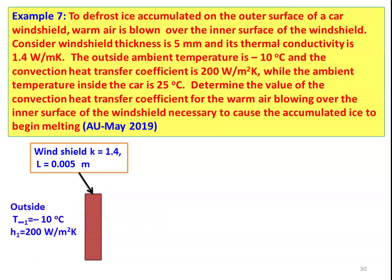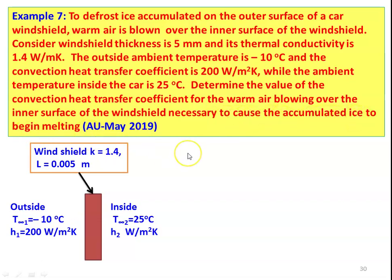The windshield has K = 1.4 W/m·K and thickness 0.005 m. Outside air: T∞1 = −10°C, h_o = 200 W/m²·K. Inside air: T∞2 = 25°C, h_i = unknown. For ice to begin melting, we require 0°C at the outside surface of the windshield, so T1 = 0°C. The thermal circuit connects T∞1 through convective resistance (1/h_o), conductive resistance (L/K), and convective resistance (1/h_i) to T∞2.